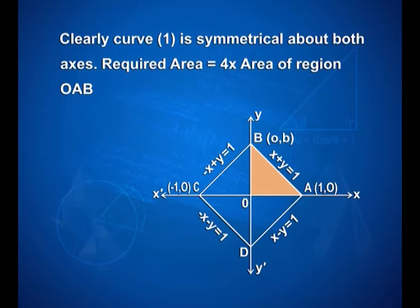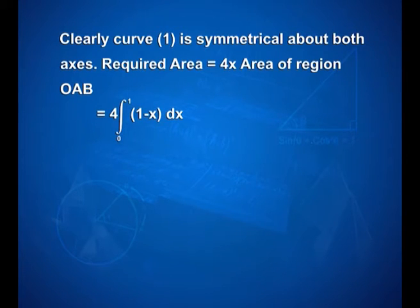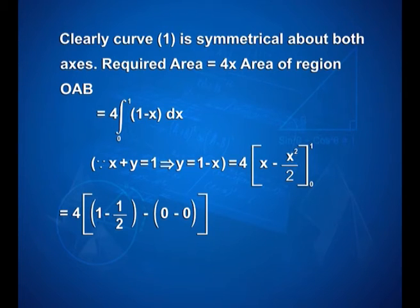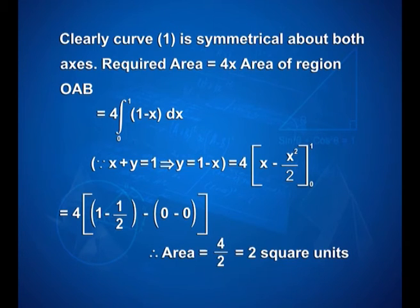Clearly, the curve is symmetrical about both the x and y axes. Therefore, the required area is given by 4 times the area of region OAB, that is equal to 4 into integral 0 to 1 of (1 minus x) dx. Since x plus y is equal to 1 implies y is equal to 1 minus x, this equals 4 into [x minus x square upon 2] with limits 0 and 1. On applying the limits, we have 4 into (1 minus 1/2 minus 0), therefore the required area is 4/2, that is 2 square units.